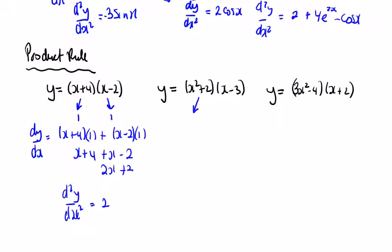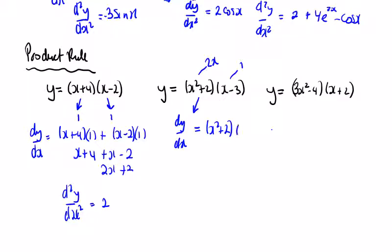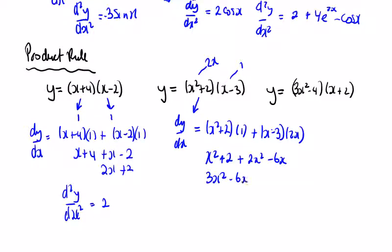Second one: dy dx is equal to — the first differentiated is 2x and the second differentiated is 1. So we're going to have x squared plus 2 by 2x, plus x... just be careful: the first by the second differentiated, plus the second by the first differentiated. So x squared plus 2 plus 2x minus 6x, which is 3x squared minus 6x plus 2, and that's dy dx.